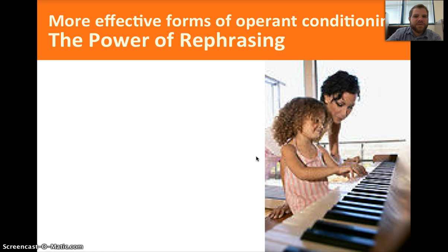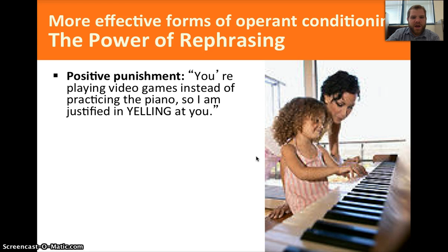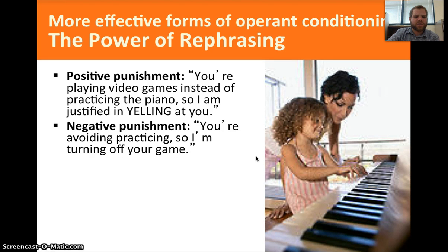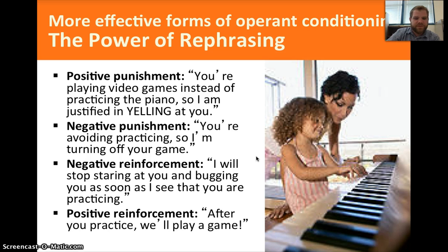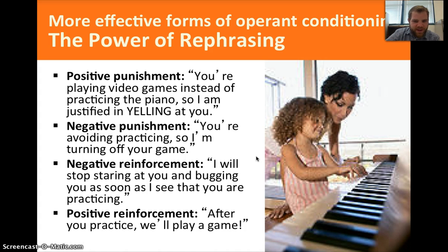There are more effective forms of operant conditioning, such as the power of rephrasing. For example — positive punishment: you're playing video games instead of practicing the piano, so I'm justified in yelling at you. Negative punishment: you're avoiding practicing, so I'm turning off your game, taking something away. Negative reinforcement: I will stop staring at you and bugging you as soon as I see you practicing — you're taking something unpleasant away. Positive reinforcement: after you practice, then we'll play a game. Rather than taking the game away, you're using it as a reward. Maybe you'll find this valuable in your own life someday.